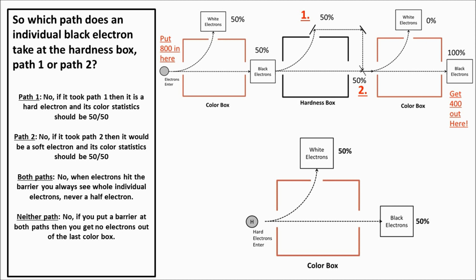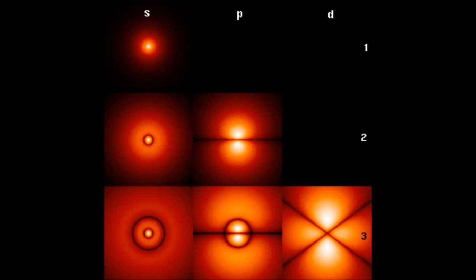Superposition is a way to describe the movement of particles when it has no real-world equivalent. In this two-path hardness device, the electrons are in a superposition of being both hard and soft. If you've taken a chemistry class, you may have heard of electron orbitals — where the electron is somewhere in a cloud around the atom and you don't know where it is. What your teacher was describing is that the electron exists in a superposition around the nucleus. There is no real-world position for the electron until you measure it. All particles exist in a superposition until they are measured.